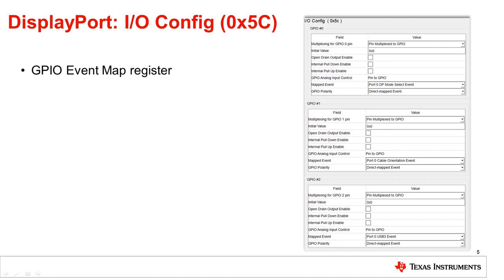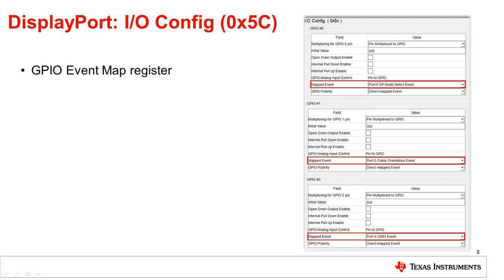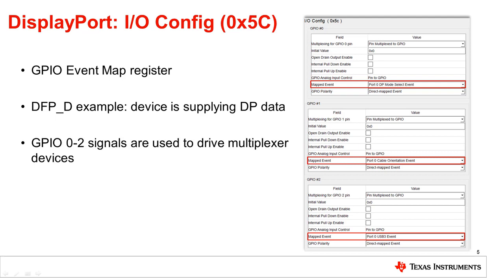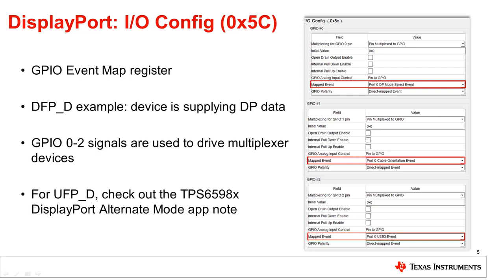The second register that needs to be configured for DisplayPort is IOConfig Register 5C, the GPIO event mapping register. The only option that needs to be changed in this register is the mapped event setting. The mapped events have been changed to match a DFP_D device. GPIO events 0 through 2 are used to drive multiplexer devices, which will differentiate between the DisplayPort data and the USB data. For more information on DisplayPort and how to configure a UFP_D setup, please check out the DisplayPort alternate mode app note linked below.